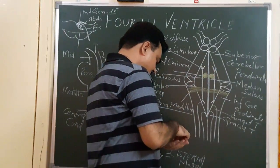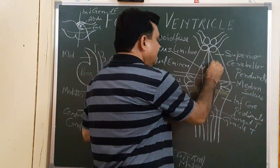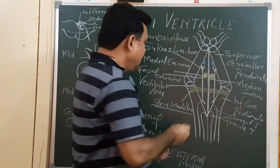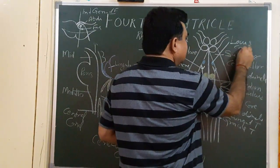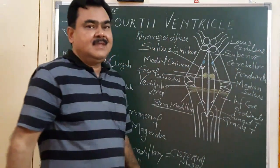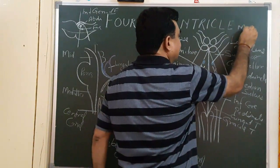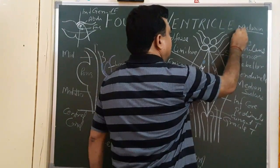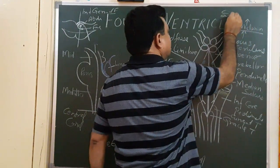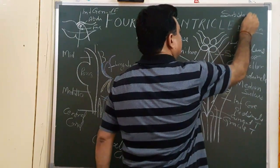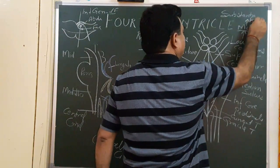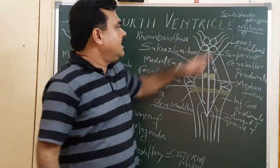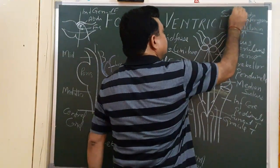Above the superior fovea, there is a bluish-colored nucleus called the locus ceruleus. This bluish color is due to the presence of melanin in the substantia ferruginea. This substance produces norepinephrine, so norepinephrine is produced in the locus ceruleus.